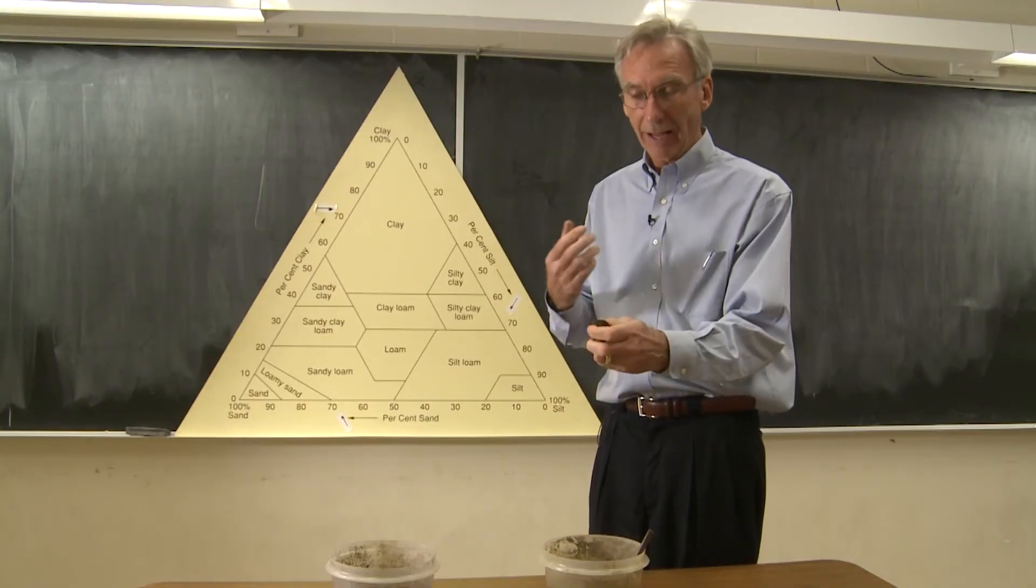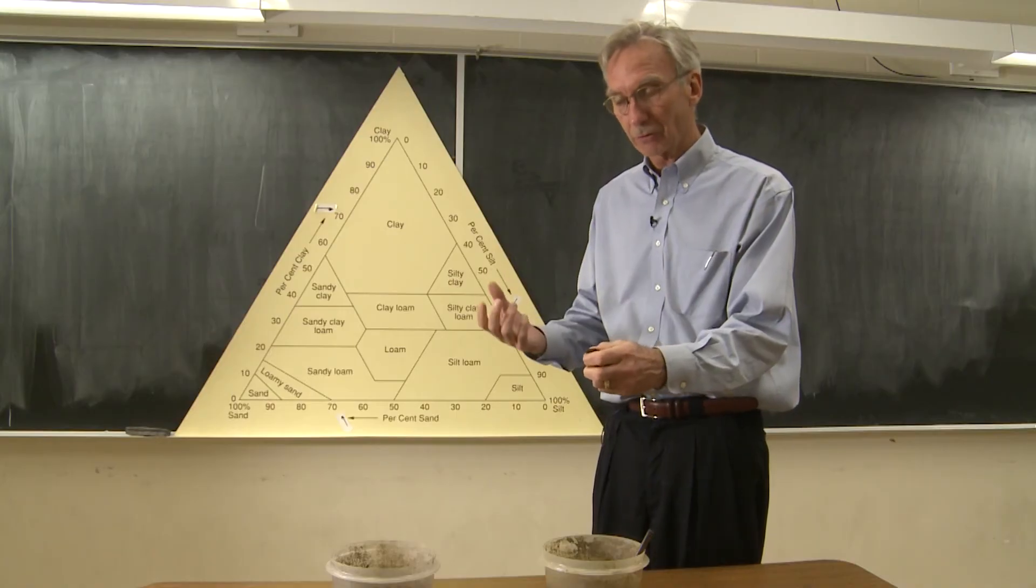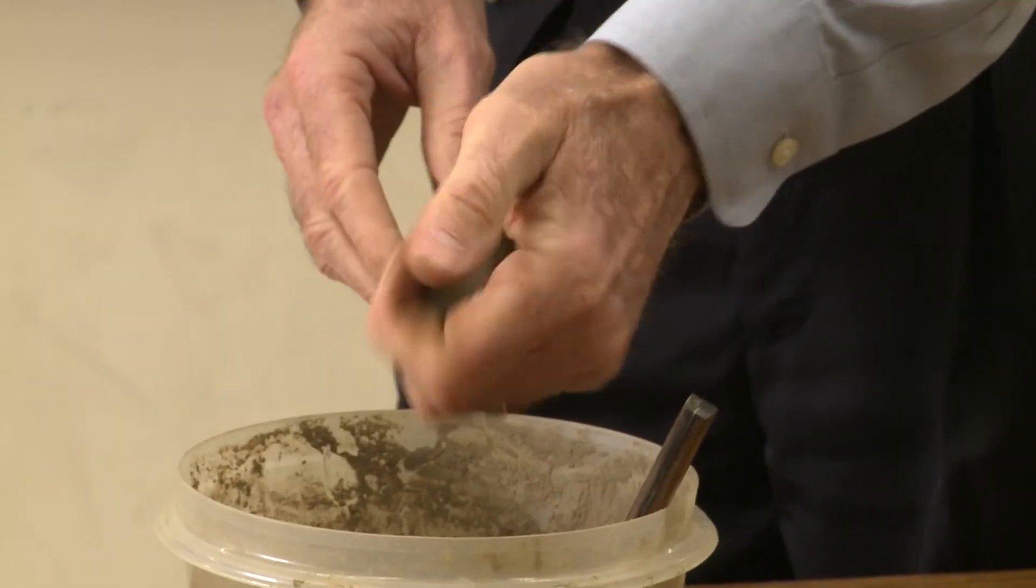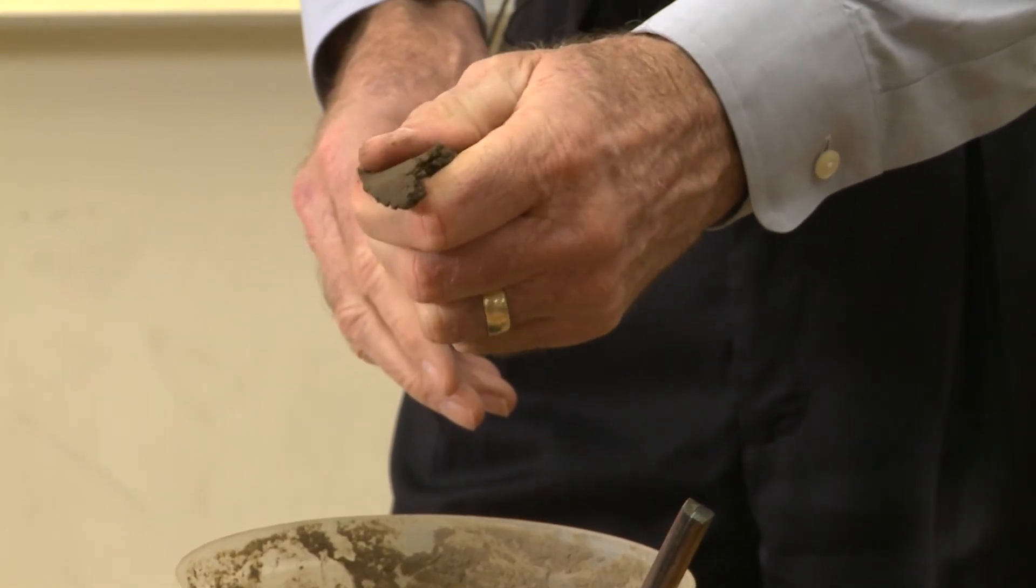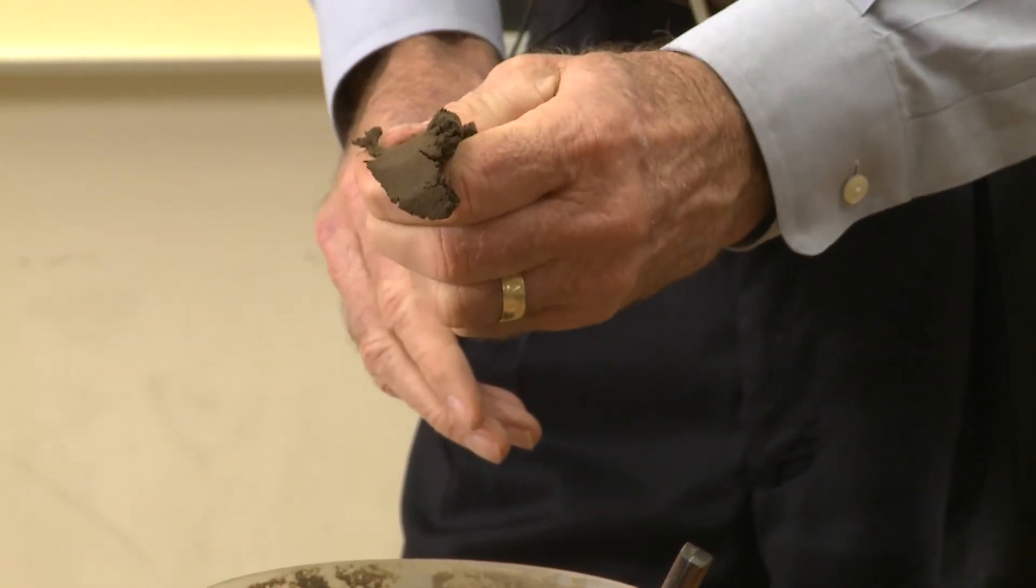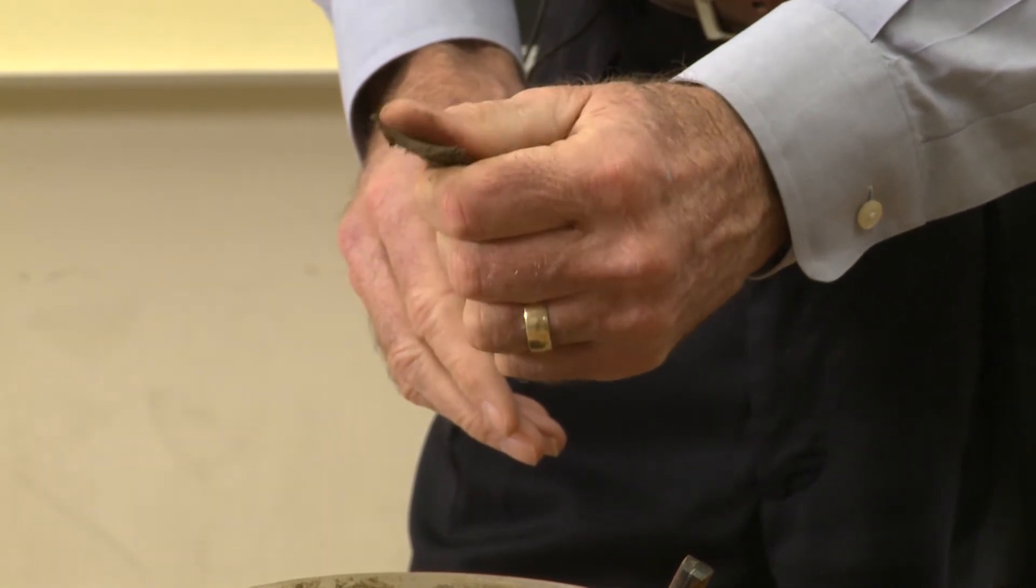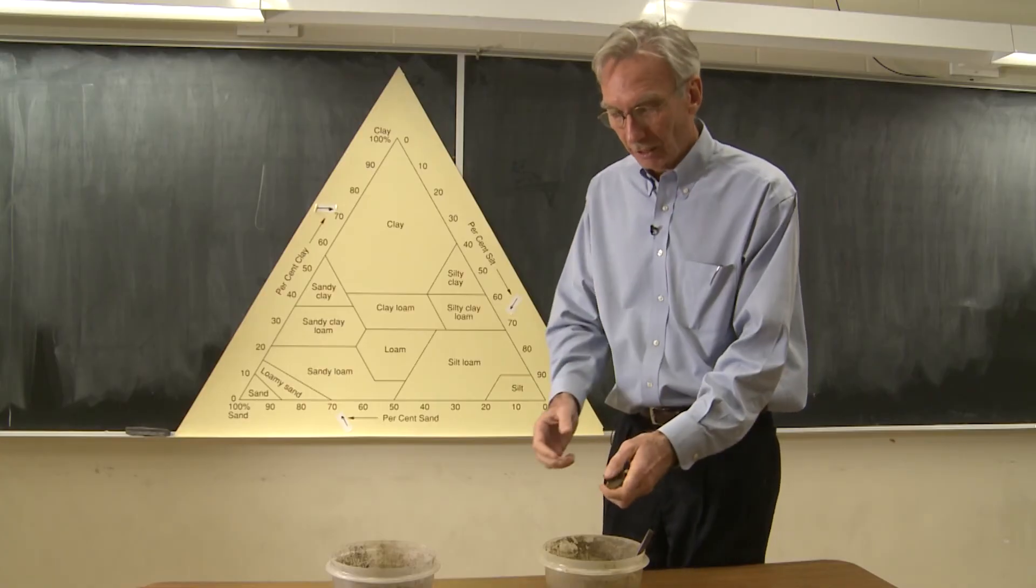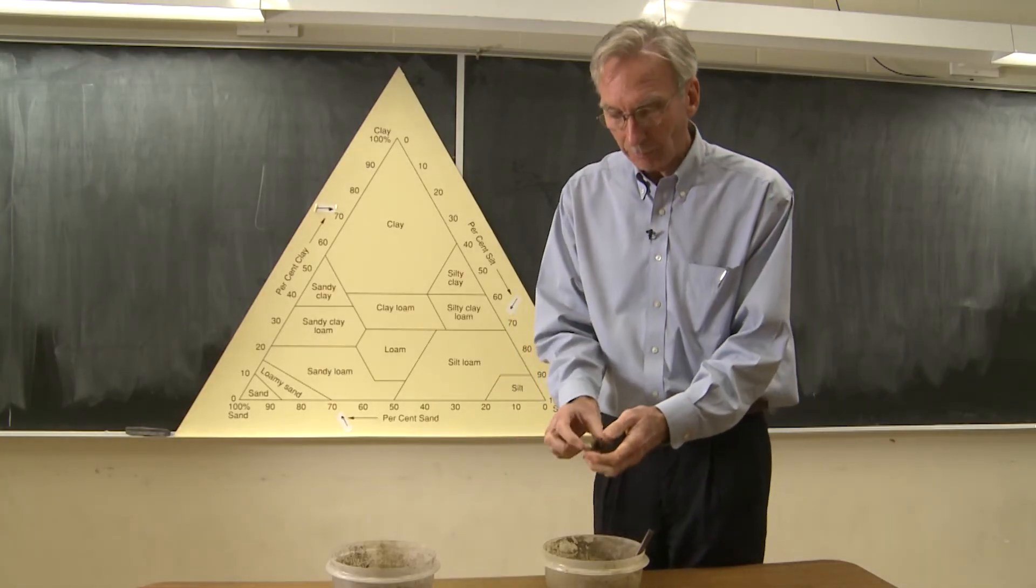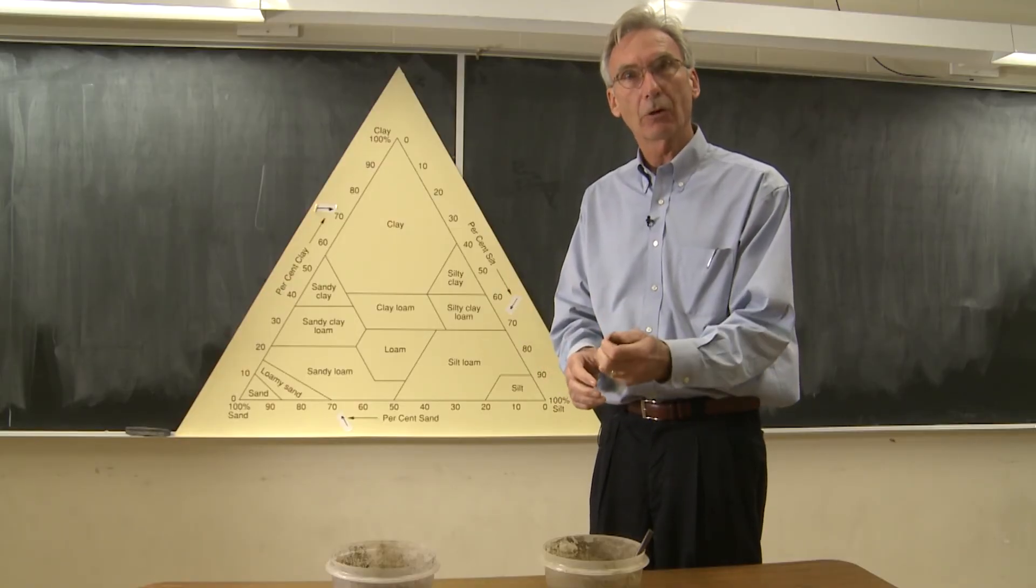And then once you have an idea of the coarseness or the smoothness of the sample, what you want to do is press it out between your thumb and forefinger. And if the sample doesn't form a very long ribbon, that's going to tell you it doesn't have a lot of clay in it. So chances are the texture of this particular sample, which is really smooth, not a lot of clay, is going to be a silt loam.